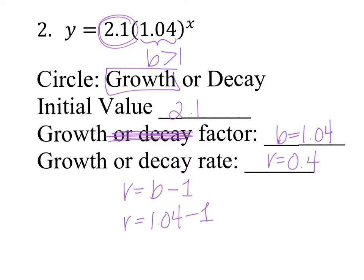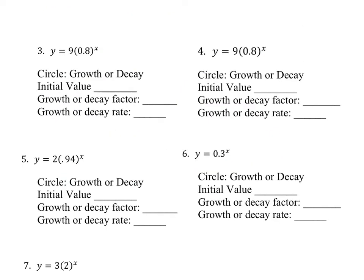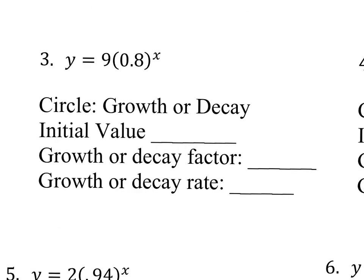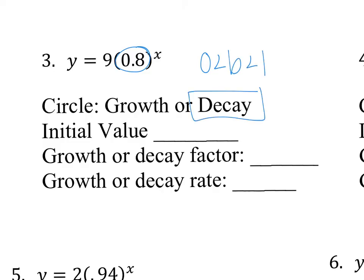Let's do a couple more examples. Looking at number 3, am I growth or decay? With b equal to 0.8, b is actually between 0 and 1, so it's going to be decay. My initial value is what comes first, which is 9. My growth or decay factor is the b value, and b equals 0.8.